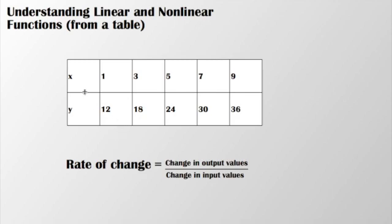I'm looking at this table and I want to know if it represents a linear function. First thing I'm going to do is take a look at the change in the output values. I have from 12 to 18, it's a change of 6. And it seems to be a constant change of 6 in my output values. And then my input values seem to have a constant change of 2.